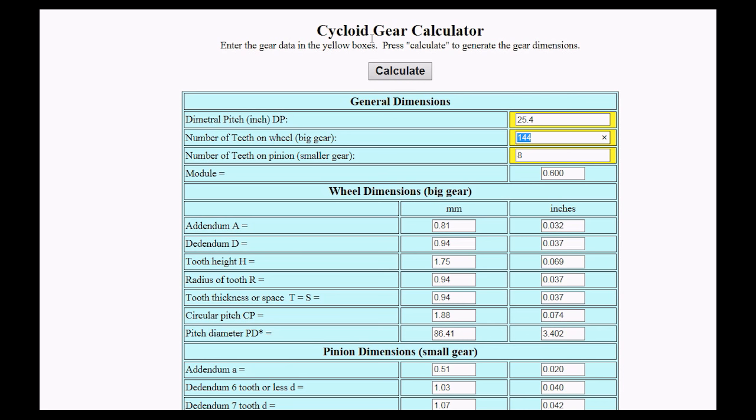So the first thing I did was I went to the Internet, and I did a search on cycloidal gear calculators, and there are quite a few of them. And they only need some basic information here. The first question they ask is the diametrical pitch in inches, which is strange, because every cycloidal gear I've ever seen has been done in modules, which is in metric.